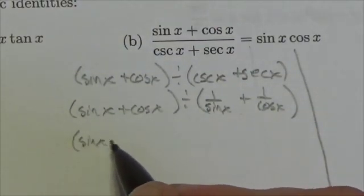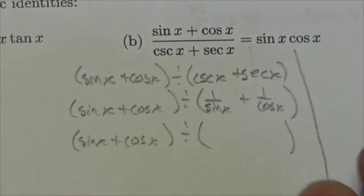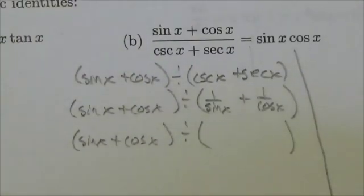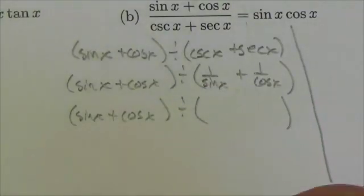Then I go back and I say, do I see any Pythagorean identities here? The answer is no, I don't. Doing that did not produce any Pythagorean identities. But I do have some obvious algebra now. There's two fractions here. I need to add them together.